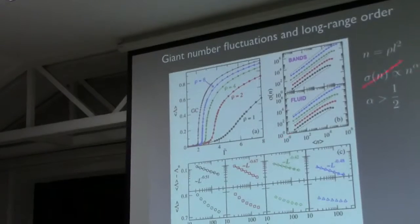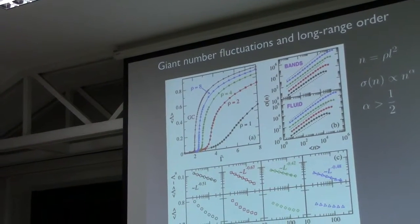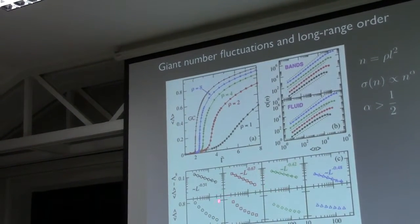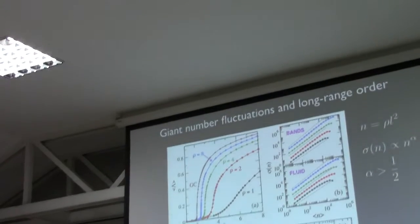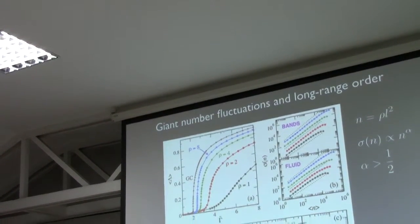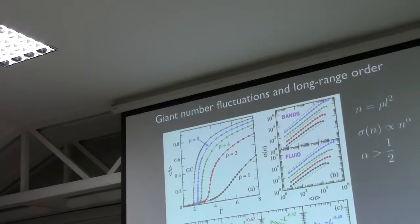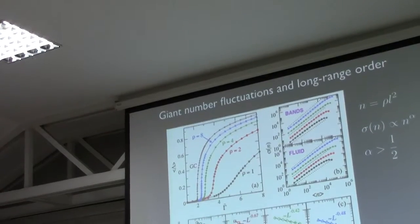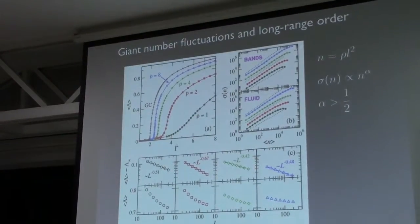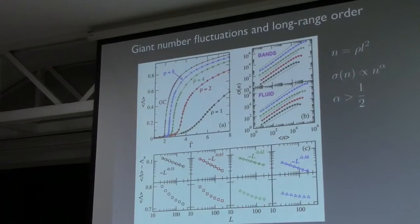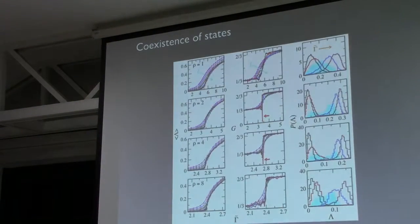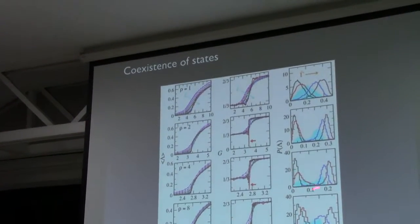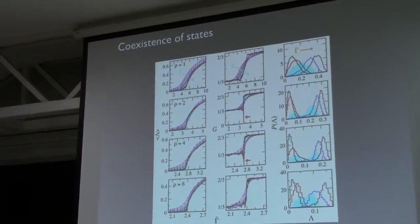The other thing we characterized is long-range order, to see if this transition is a real transition. For this analysis, we estimate the critical point and subtract it from the order parameter, then extrapolate as L increases. We have long-range order in our system without self-propulsion. This is to show that there is this coexistence band around the critical point.